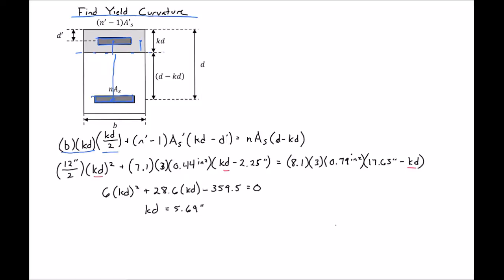So then we can figure out our yield curvature. Yield curvature is just equal to our yield strain in the steel over D minus KD. In our case, our yield strain, 0.0021, divided by 17.63 minus 5.69. We'll get this to equal 1.73 times 10 to the negative 4th radians per inch.